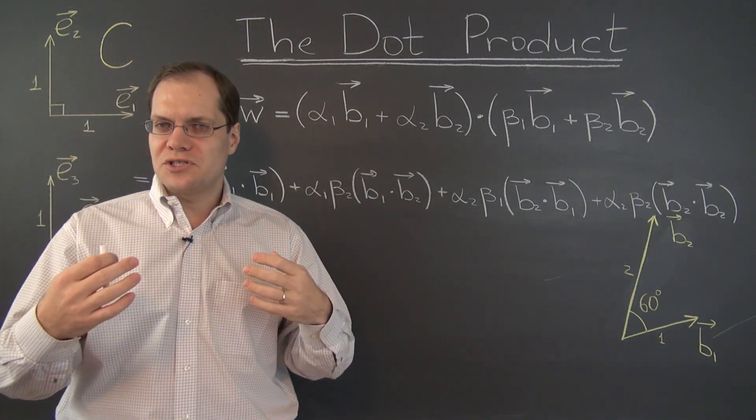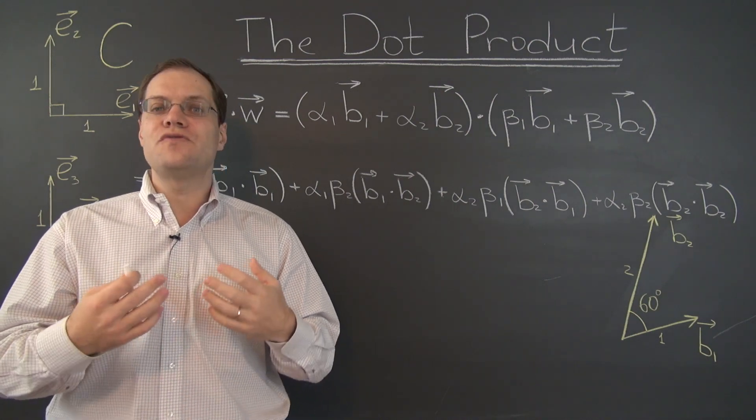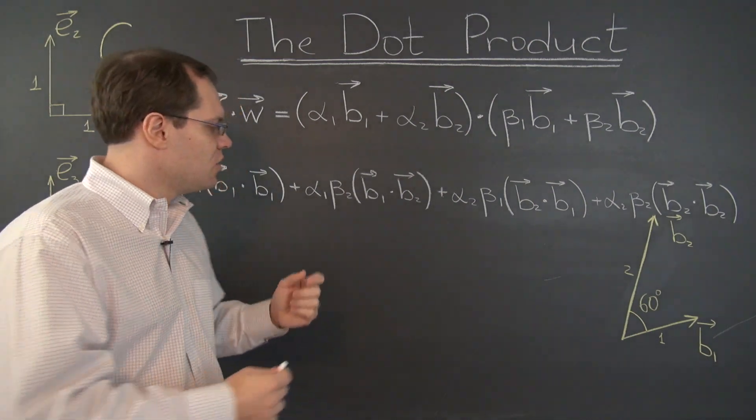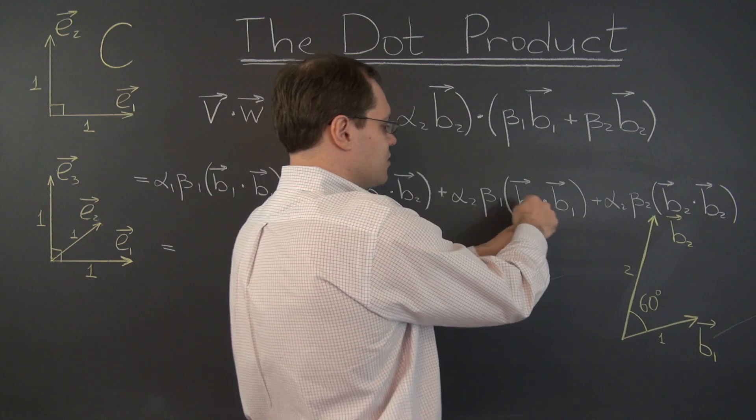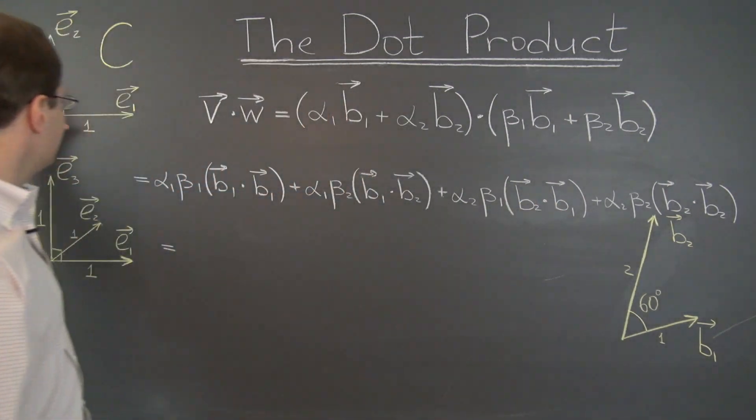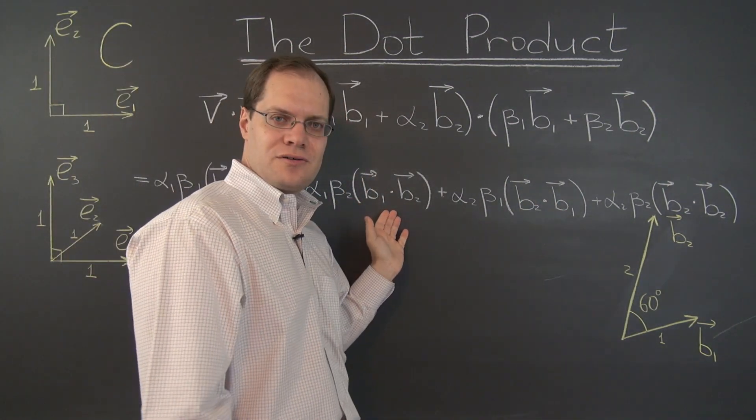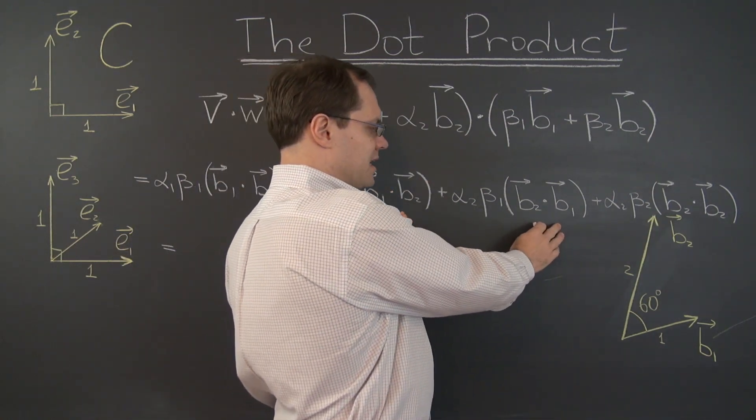Except before, we were using a Cartesian basis. So a few very nice things happened. For example, these cross terms dropped out because our original vectors were orthogonal. So these dot products were zero. So these two terms dropped out.